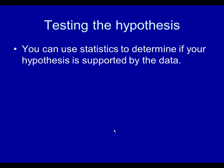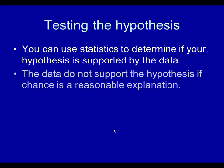When you test the hypothesis, you use statistics to determine if your hypothesis is supported by the data. The data do not support the hypothesis if chance is the reasonable explanation. The data also do not support the hypothesis if the data does not go in the direction that was hypothesized. For example, if you hypothesize that males receive higher salaries and you find that females have the higher salary, obviously your hypothesis is not supported. If it does go in the right direction, then you have to ask: is it statistically significant? Have we adequately addressed chance as the explanation?